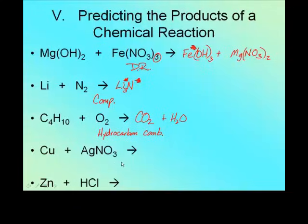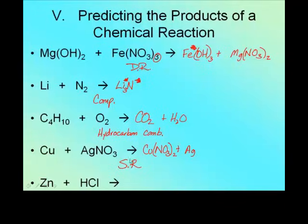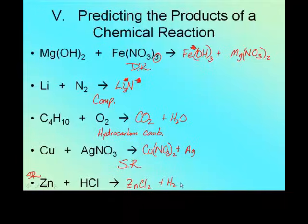Fourth one: copper plus silver nitrate — single thing plus a compound, again single replacement. Copper is plus two, Ag is plus one; they are going to switch. Cu(NO₃)₂ plus Ag. Fifth one: zinc plus HCl — again single replacement. Zn combines with Cl, giving ZnCl₂, plus H₂. And of course H₂ is diatomic, so it's H₂ on the end — not just H, don't forget that.